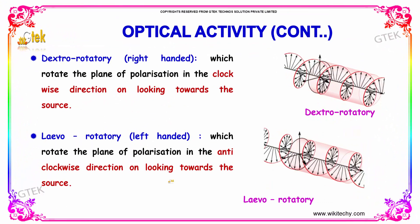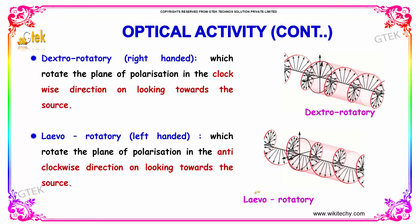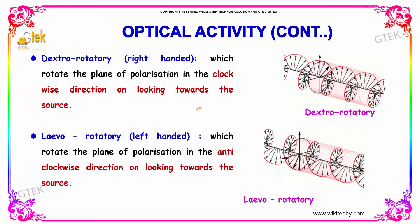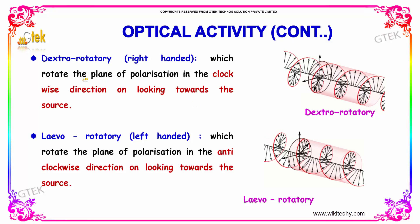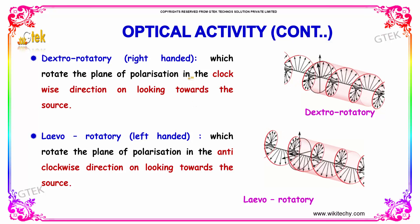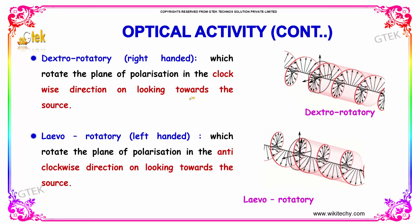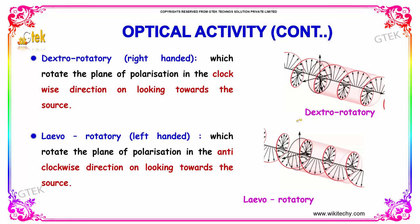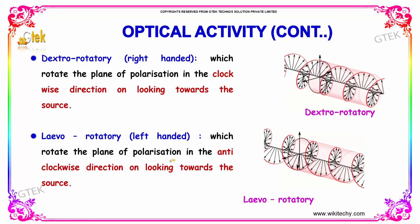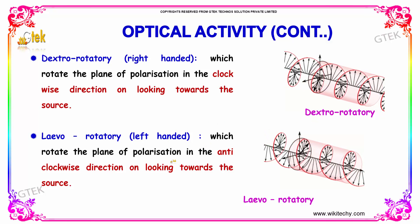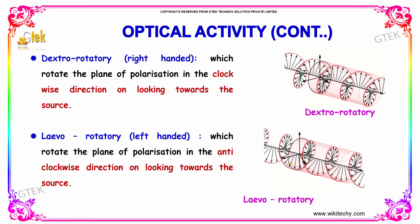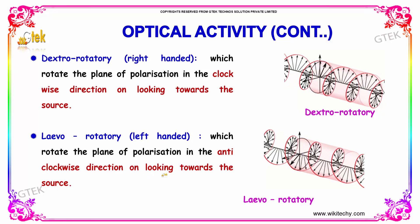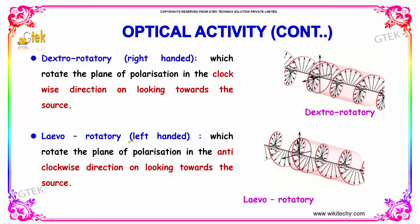As indicated, dextrorotatory is right-handed, which rotates the plane of polarization in the clockwise direction on looking towards the source. The other type is levorotatory.